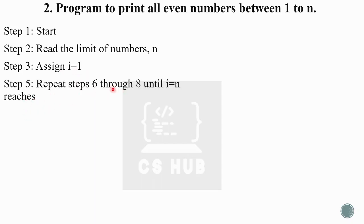Repeat steps 6 through 8 until i equals n. For example, if n is 6, we check numbers 1, 2, 3, 4, 5, 6 one by one, up to this limit. Until i equals n, we repeat the steps.